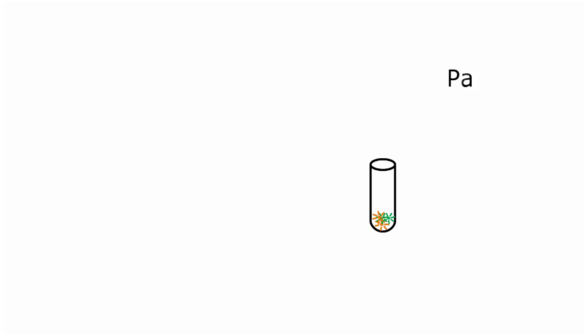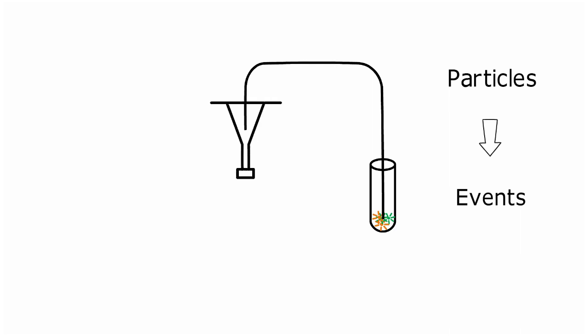The particles in your sample tube first need to be identified as events in the system. The cells travel through the sample line to the flow cell and past the laser intercept point. When particles cross the laser, they are identified as either electronic aborts, noise below threshold, or as events to be analyzed.